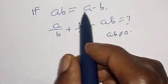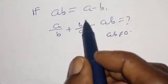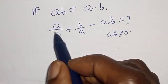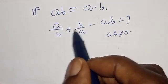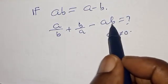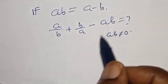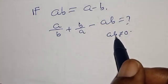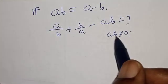If AB is equal to A minus B, then A divided by B plus B divided by A minus AB is equal to what? Provided AB is not equal to 0.